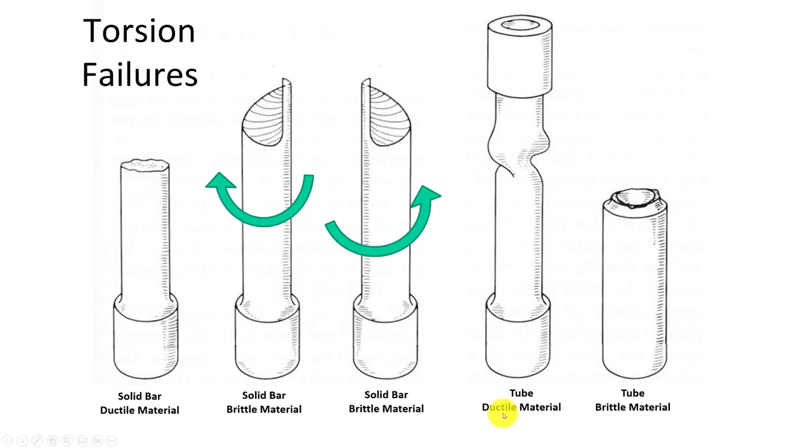Now a tube that is a ductile material is going to want to stretch more, not be brittle. It's going to kind of collapse down on itself. If it's a brittle material in a tube, it's just going to have a flat failure again.